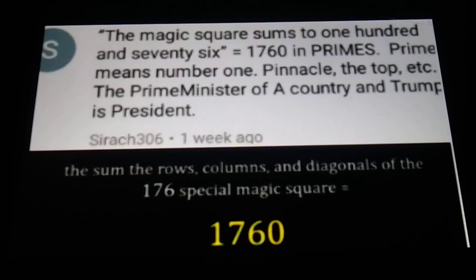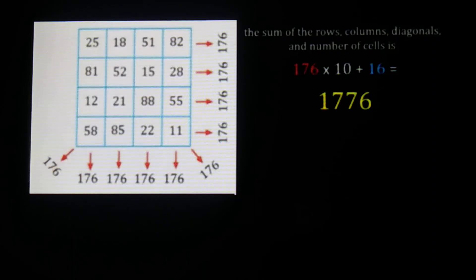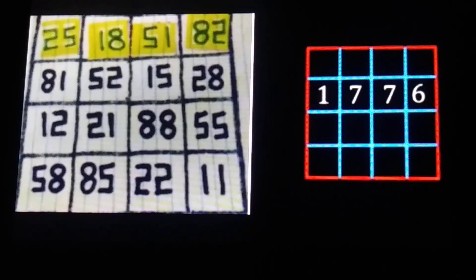Lambda did some work on this — I'll leave a link for his video. He showed the 10 different ways you can get 176: columns, rows, and a couple of diagonals. So 176 times the 10 variations, plus the 16 cells or number boxes, gives us 176 times 26 — we get 1776. You guys have to see Lambda's video about a location called American Square.